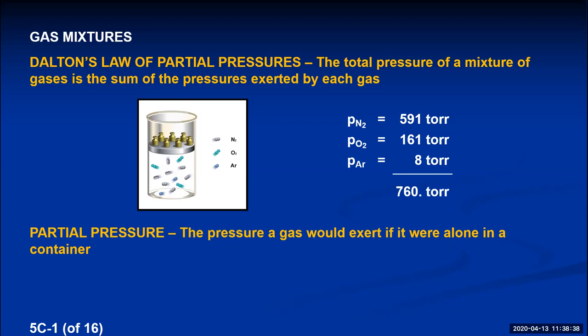Partial pressures are not directly measurable values. We can stick a pressure gauge on any gas container and measure the total pressure, but we can't tell a pressure gauge to only count when the nitrogen molecules are hitting it and not the oxygens and argons. So we can't measure a partial pressure — those have to be calculated from the total pressure and knowing something else about the mixture.